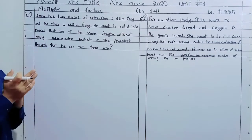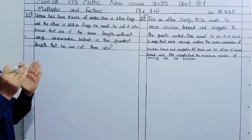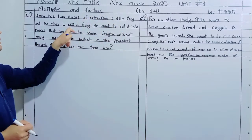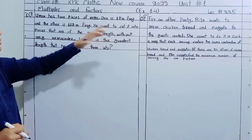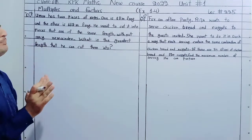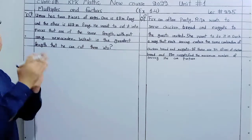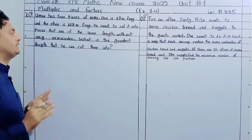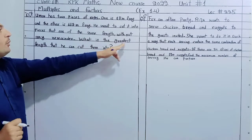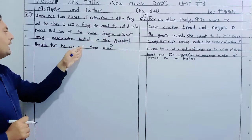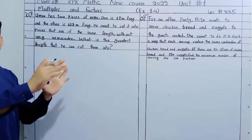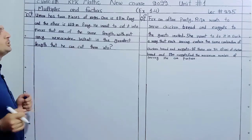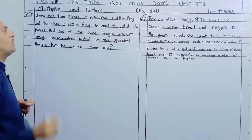Oman has 2 pieces of ropes — one is 18 meters long and the other is 112 meters long. He wants to cut them into pieces of the same length. What is the greatest length that he can cut them into? We need to find the GCD of 18 and 112 using the steps.